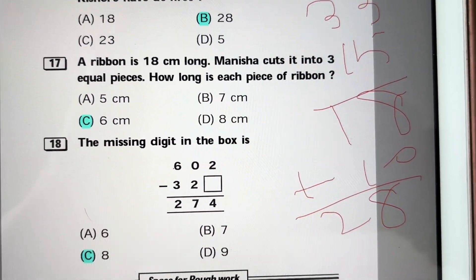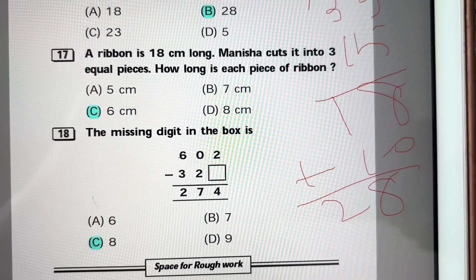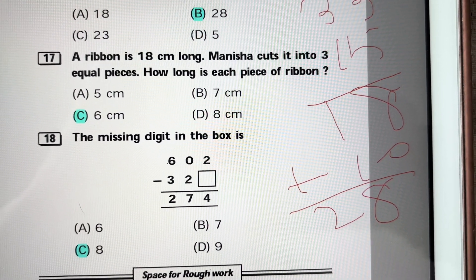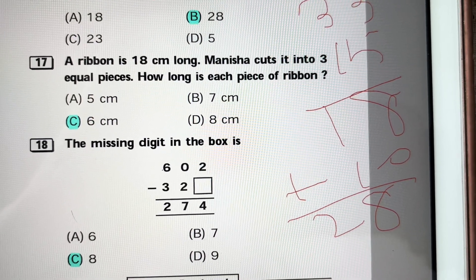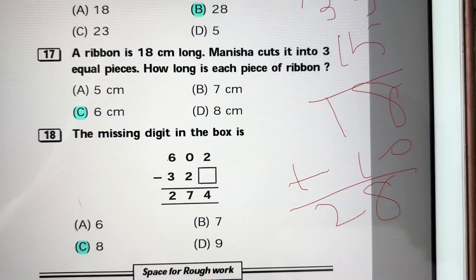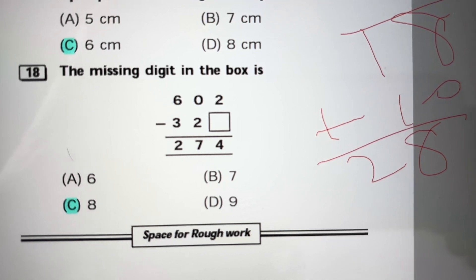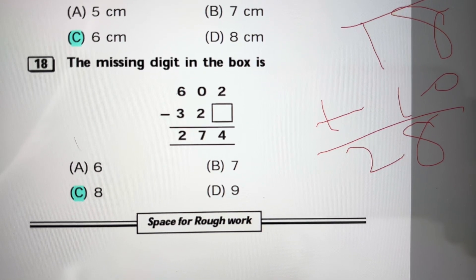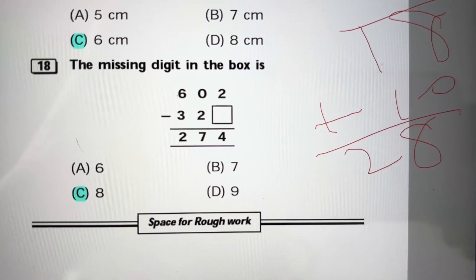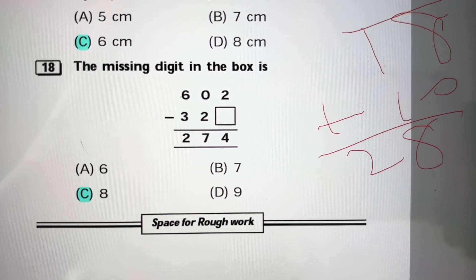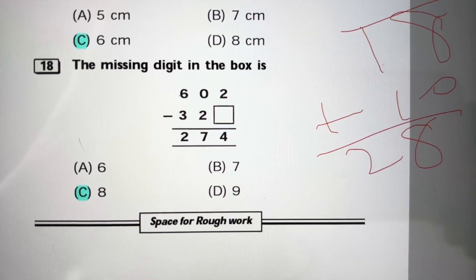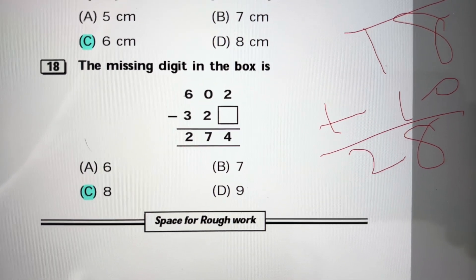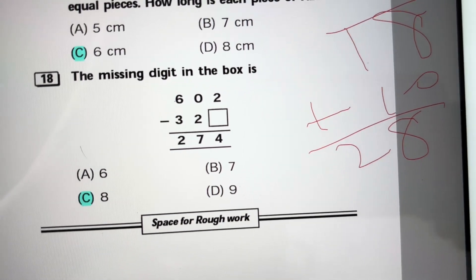Question 17: A ribbon is 18 centimeters long. Manisha cuts it into 3 equal pieces. How long is each piece of ribbon? 18 divided by 3 equals 6. Question 18: The missing digit in the box is here. 2 minus something equals 4, it can't be, so there is some borrowing. That means 12 minus something is 4. 12 minus 8 is 4, so the missing number is 8. Answer is C.